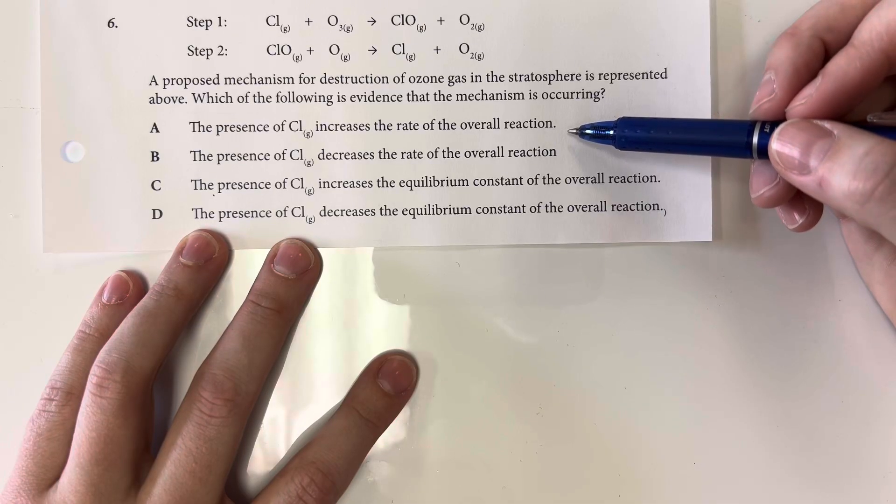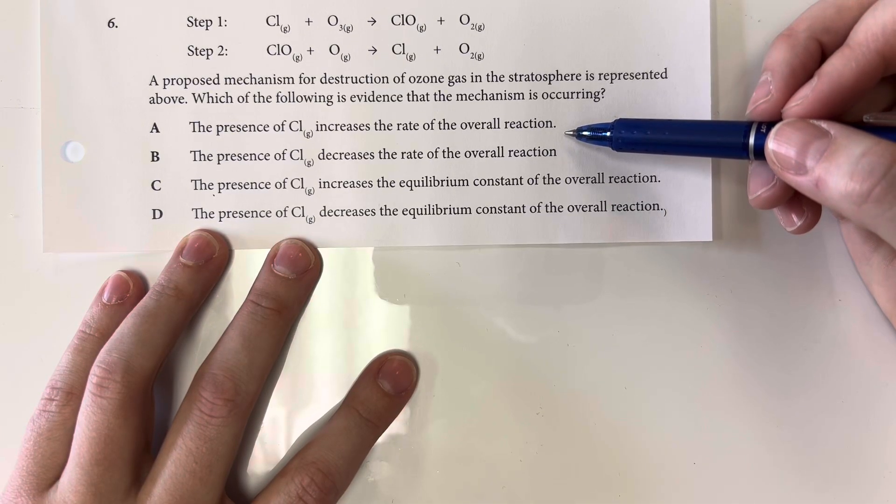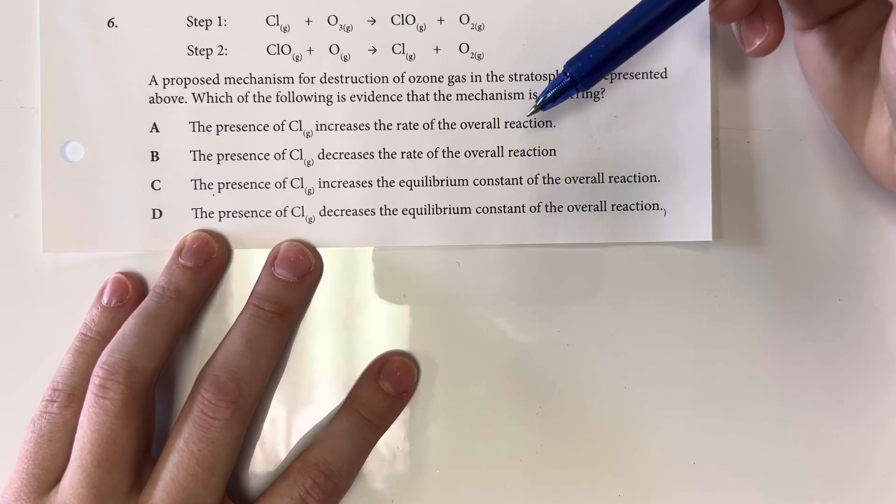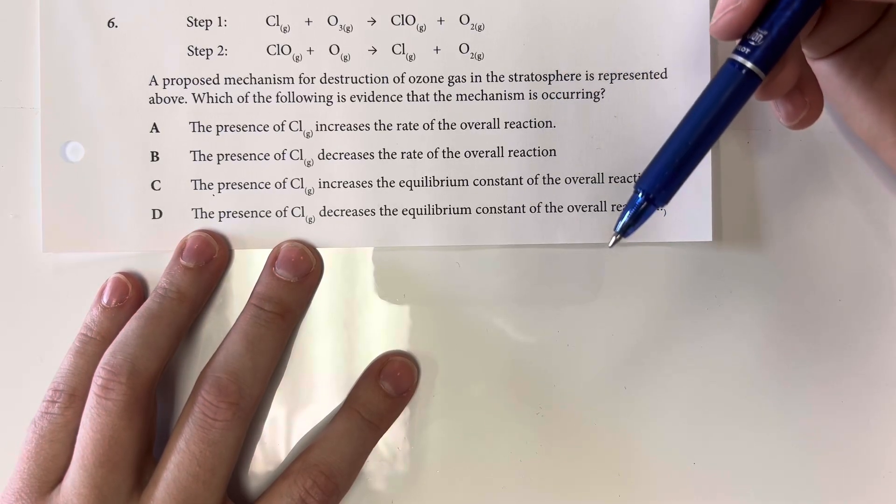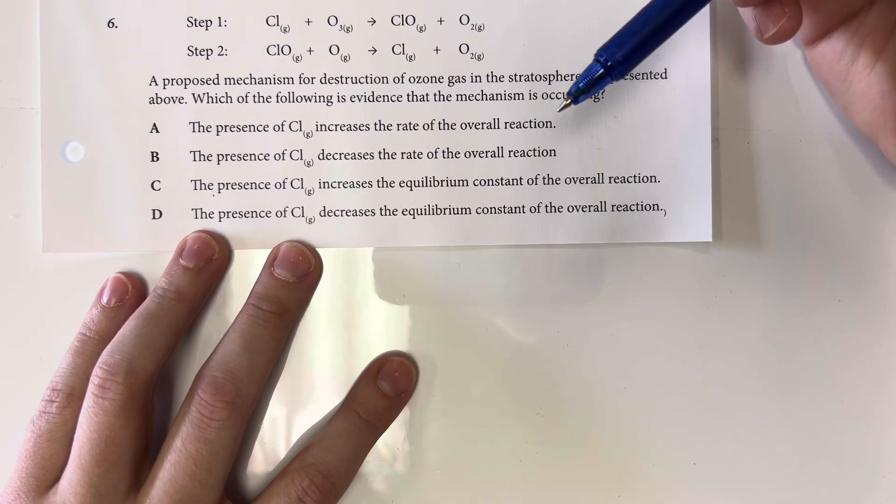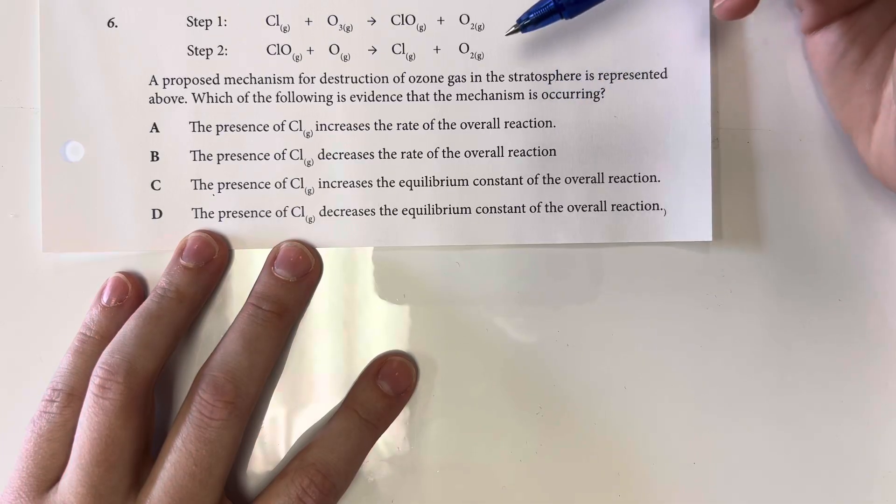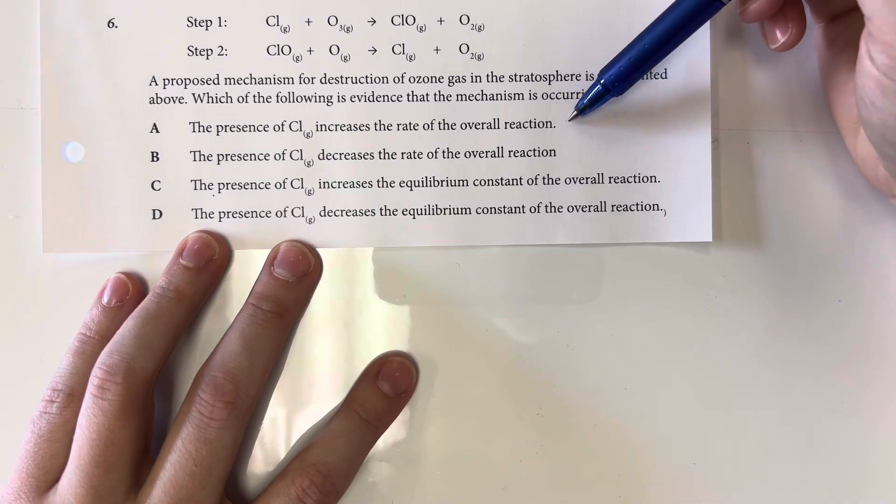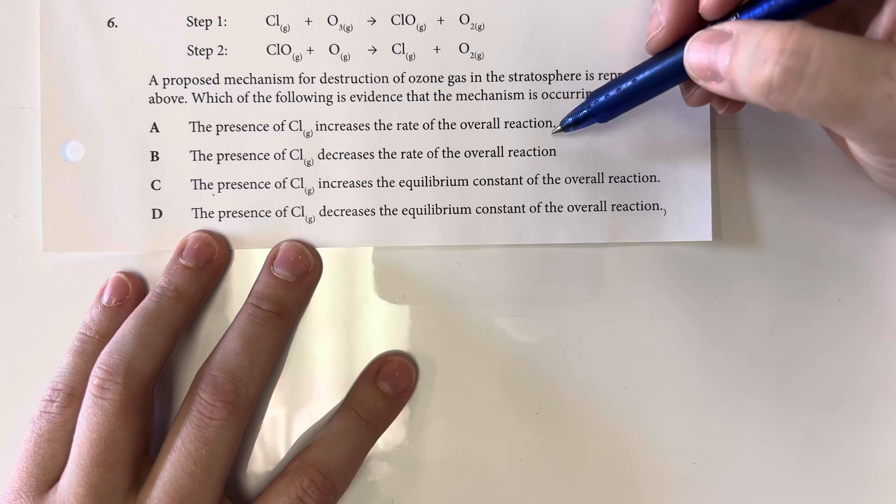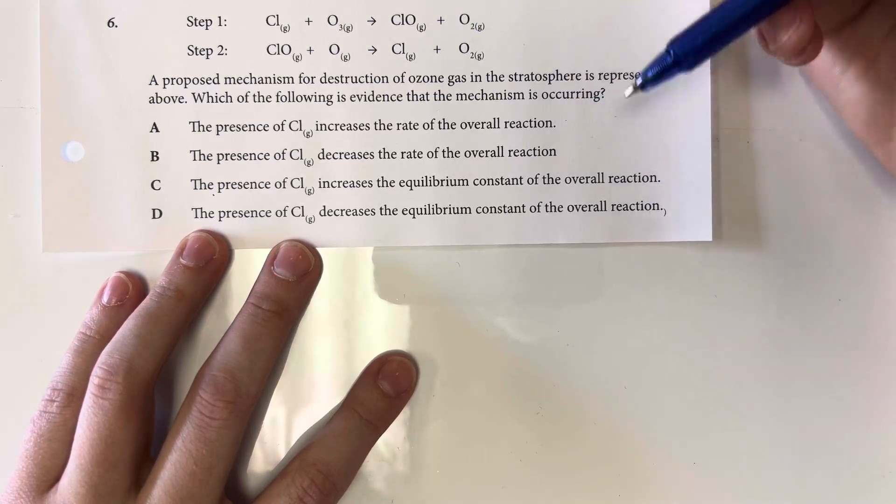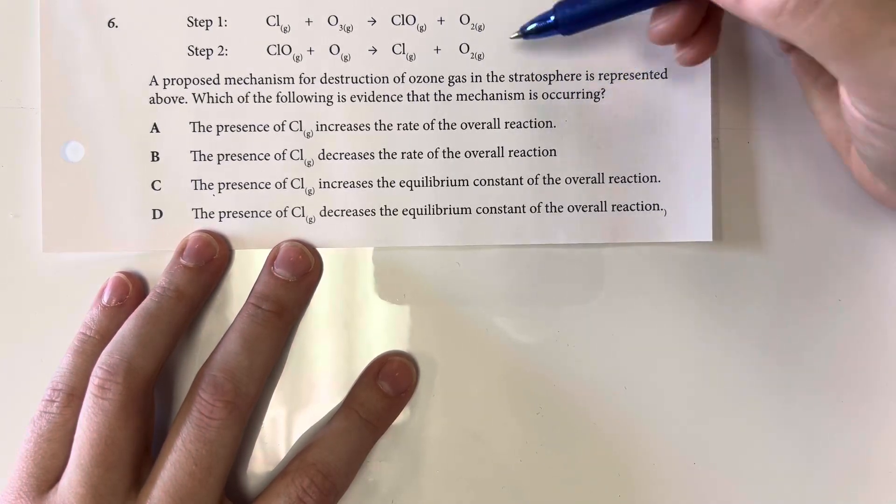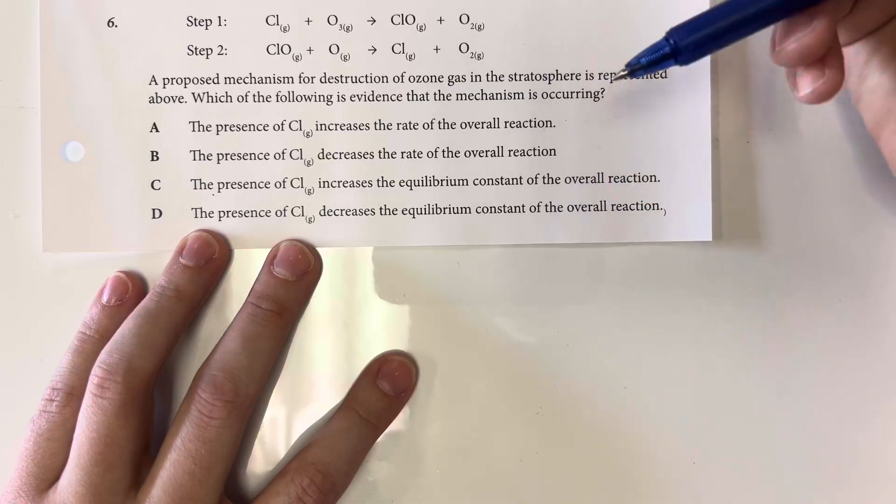The presence of chlorine increases the rate of the overall reaction, okay, that would show that it is a catalyst and would speed things along. So that is a good indication that chlorine is used somewhere in here and that this is a possible mechanism.